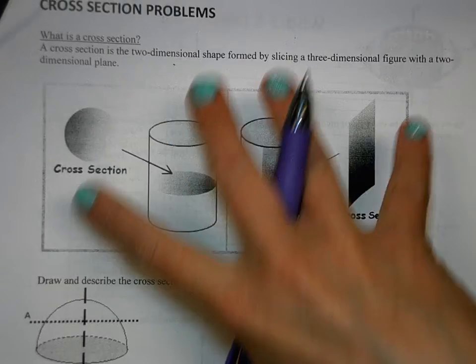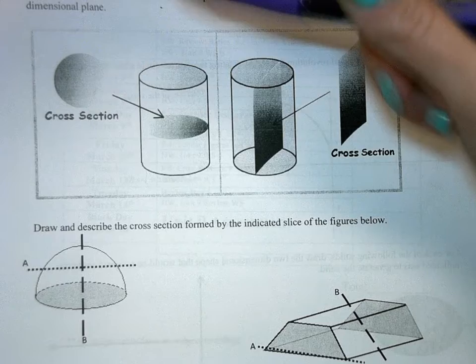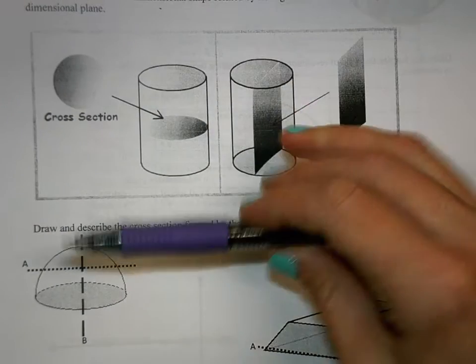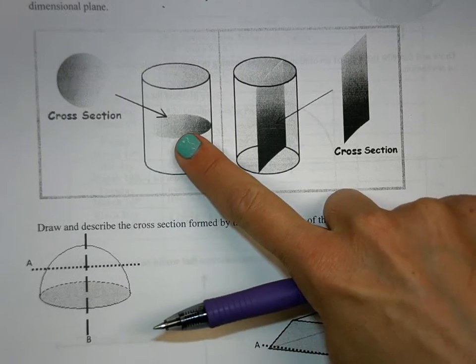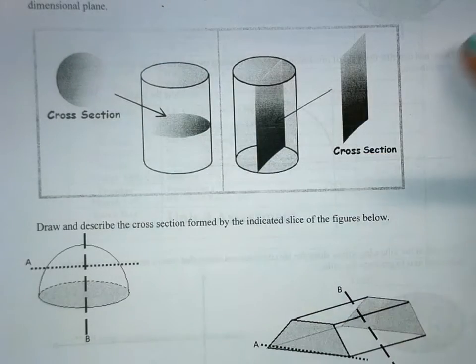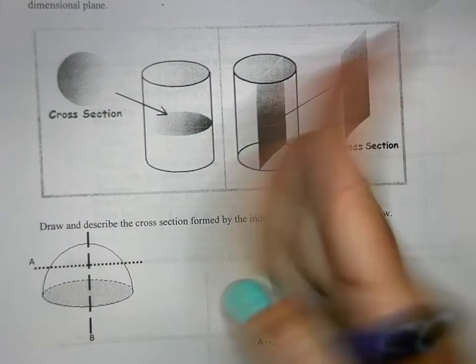So here you can see we have a cylinder, and if you take a slice from the cylinder, it is going to have a cross-section of a circle. If you take it down through the middle, you'll notice that the cross-section is a rectangle. Very good.